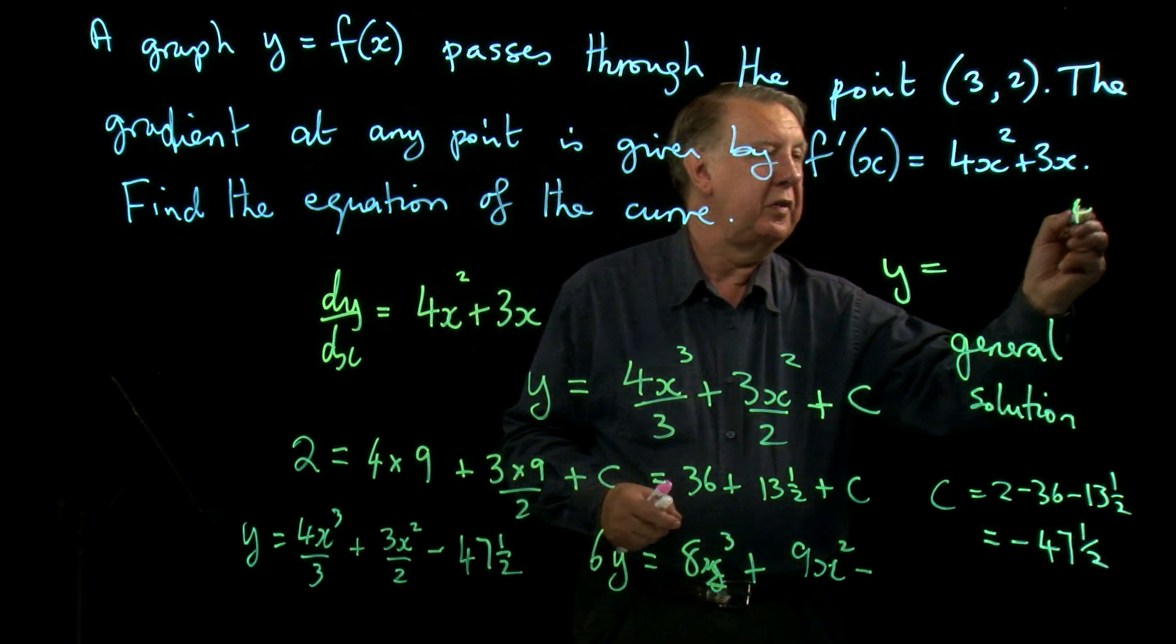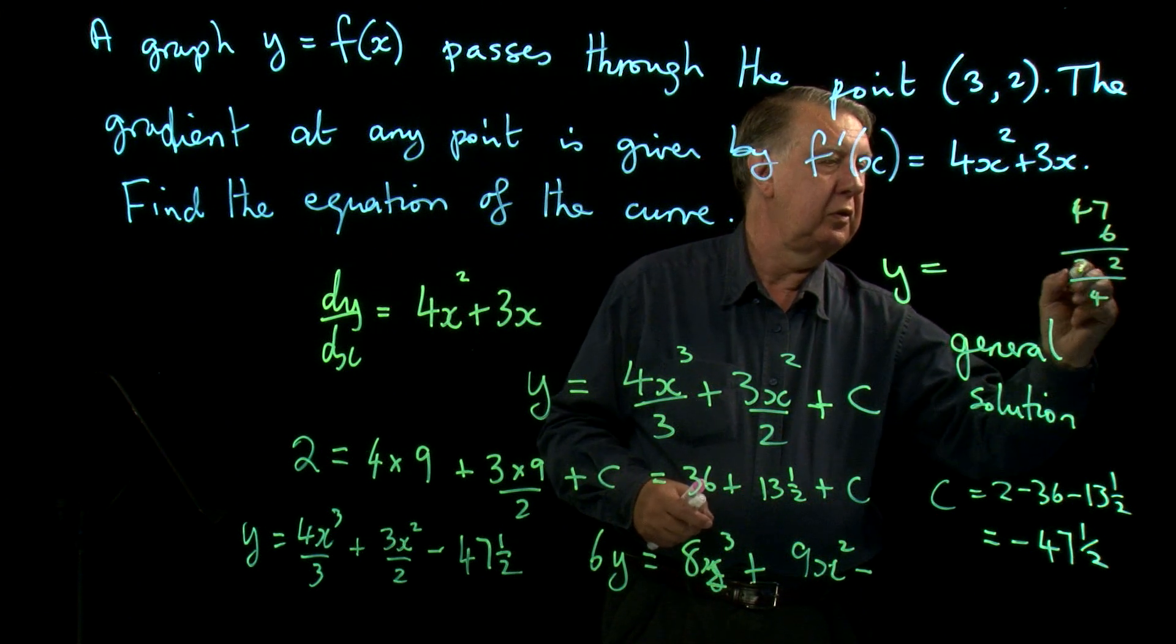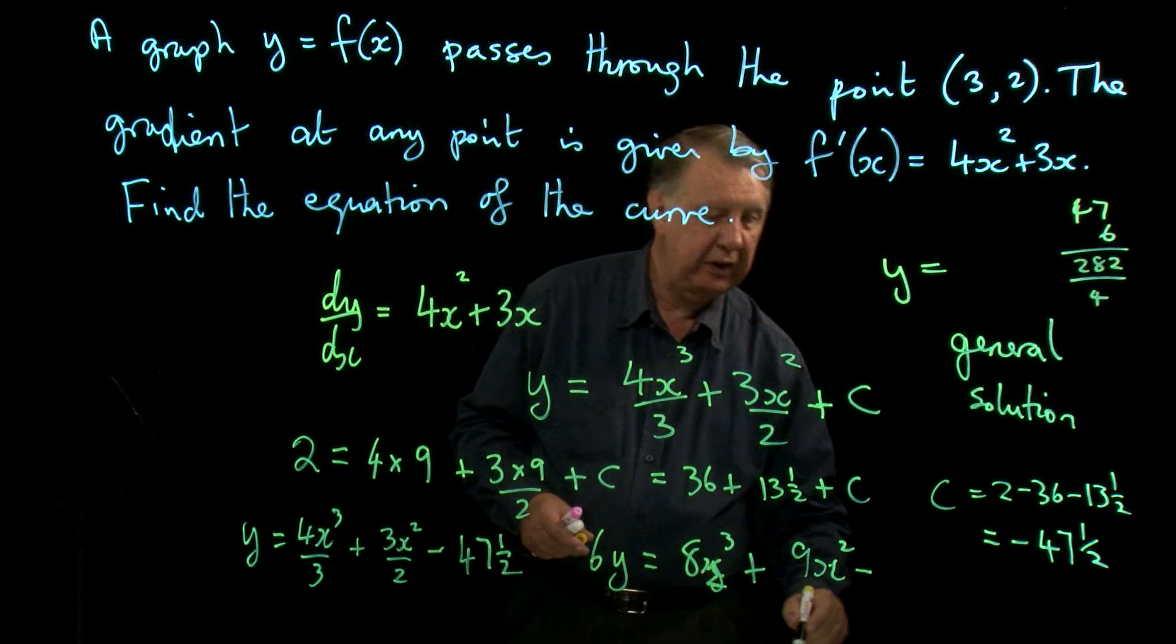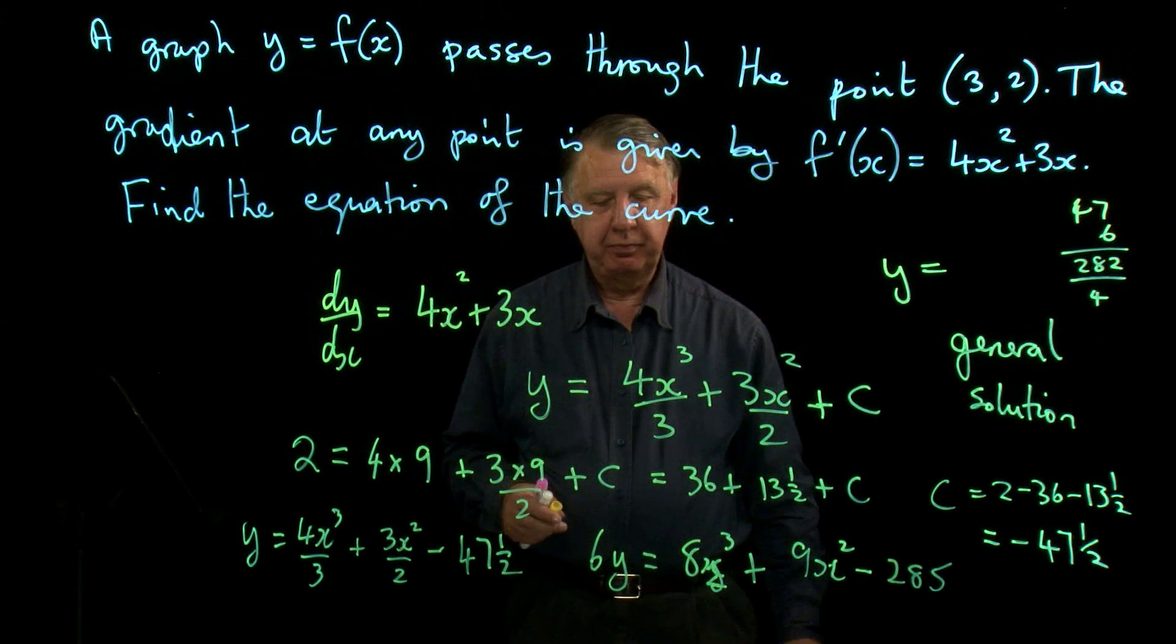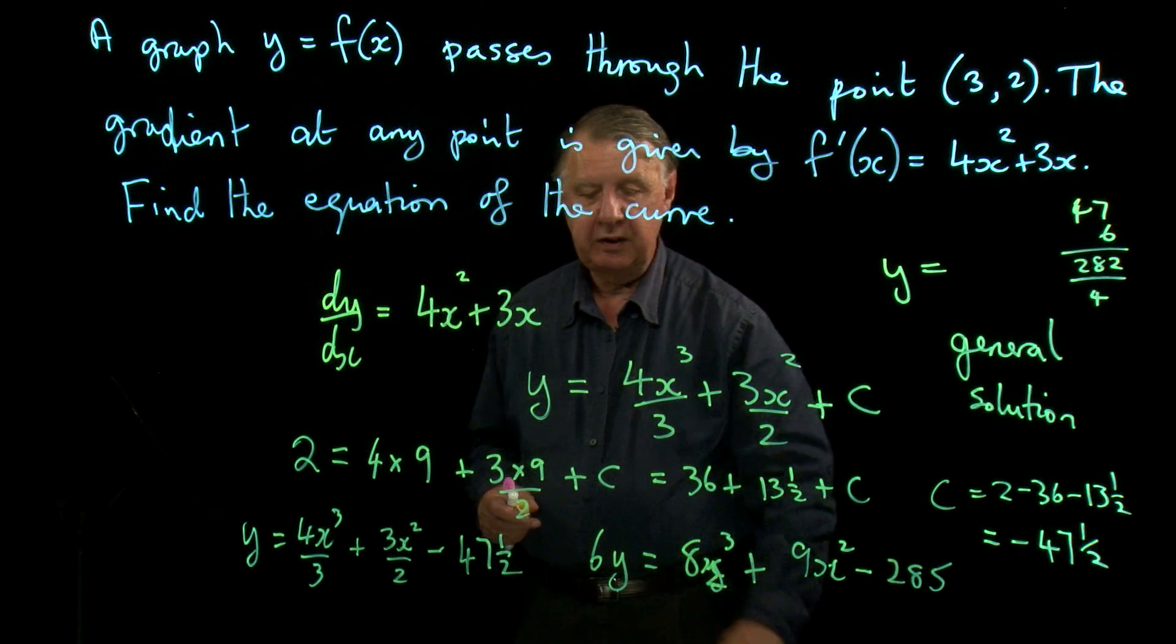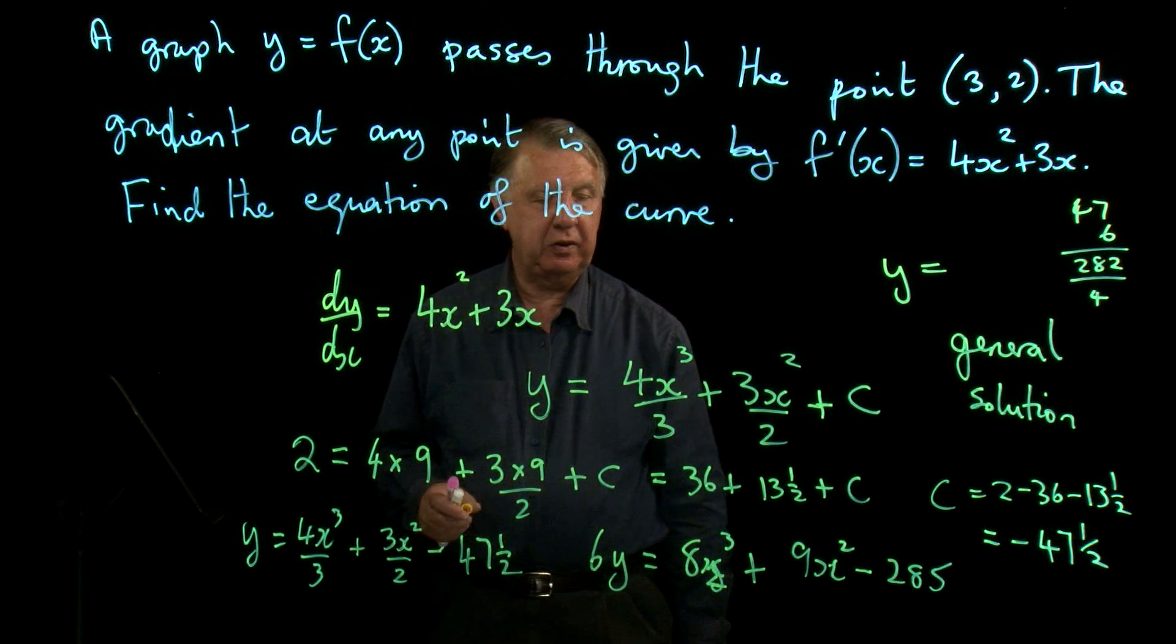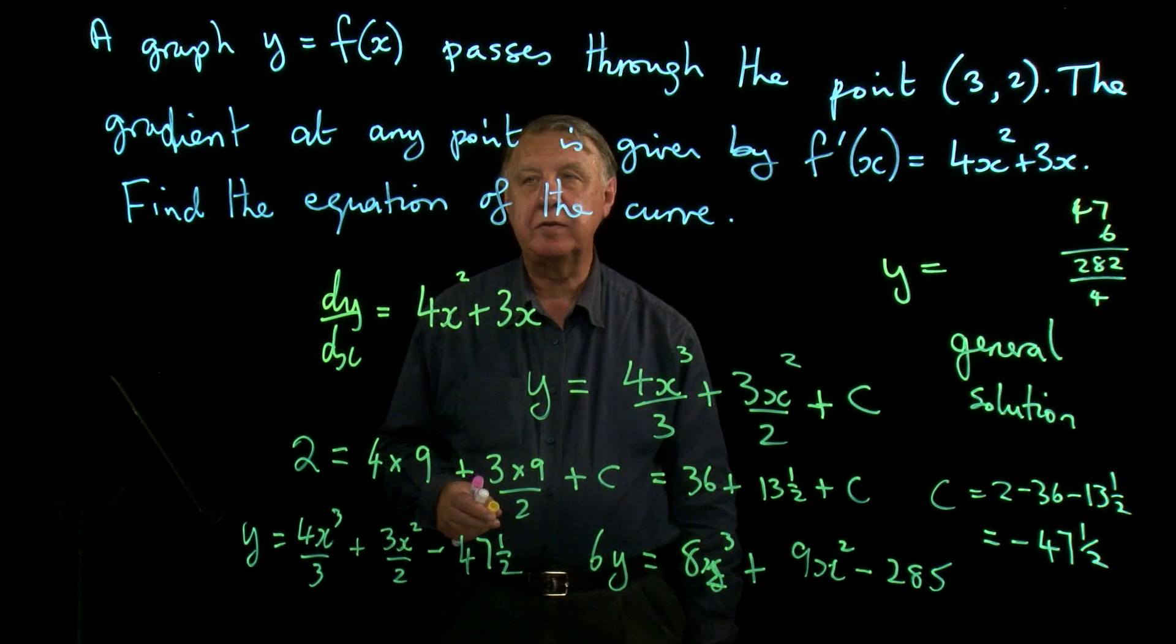Okay, so that's the final equation then in its simplest form. 6y equals 8x³ plus 9x² minus 285. So now you can start to learn about what we mean by solving a differential equation, and there will be other bits of AS level that use this sort of approach.